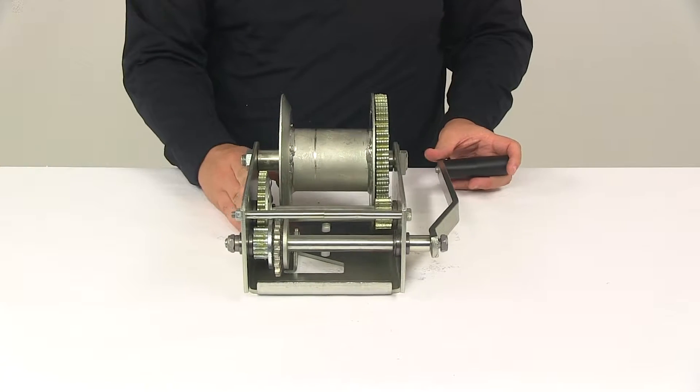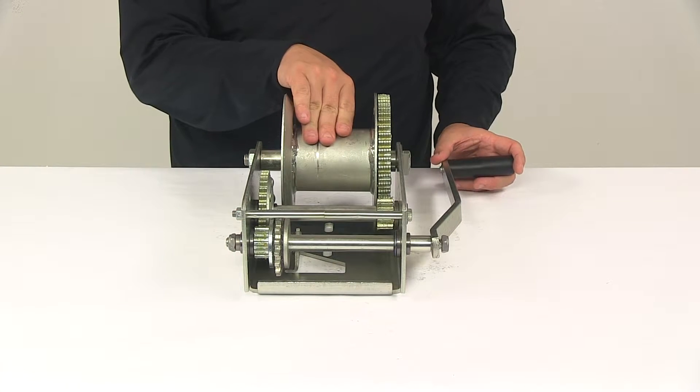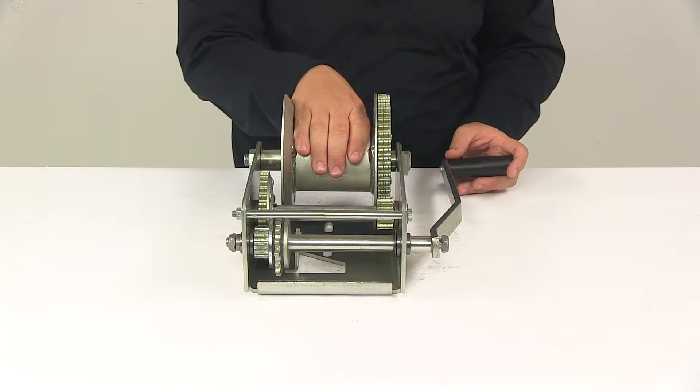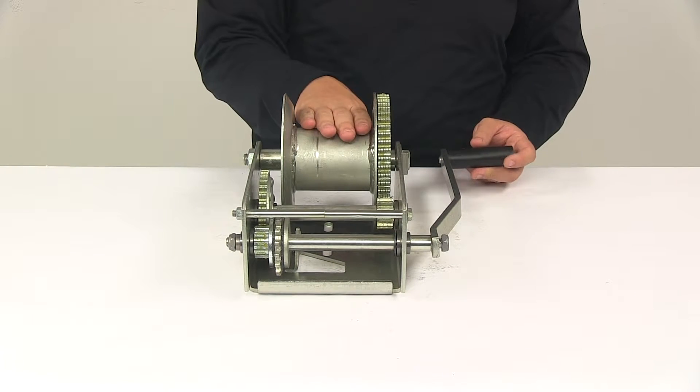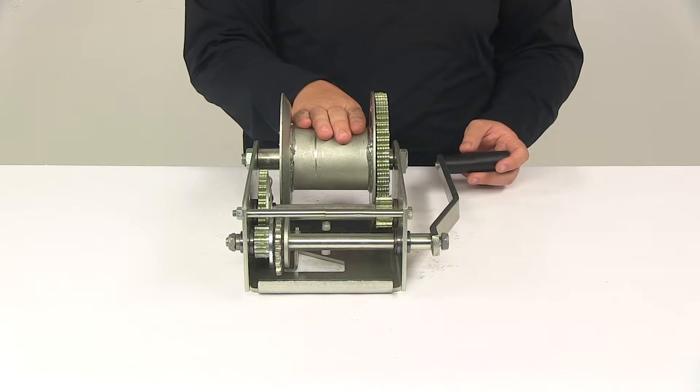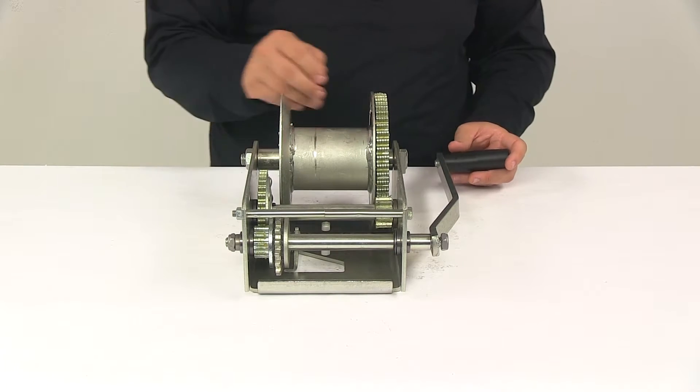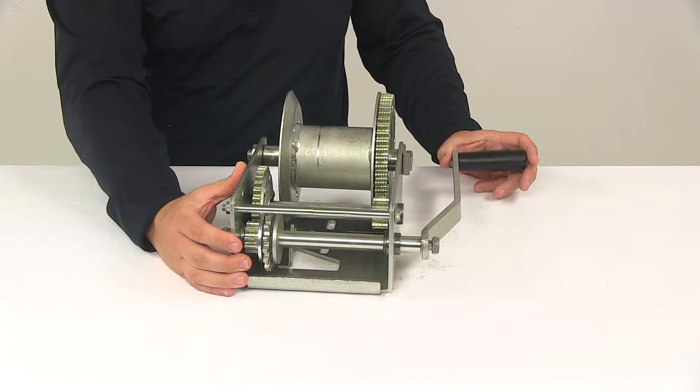The diameter of the drum is three and one eighth of an inch. Drum storage capacity is up to seventy feet with a maximum cable diameter of five sixteenths of an inch. This is designed for use with cable only. Cable test strength needs to be at least ninety eight hundred pounds.